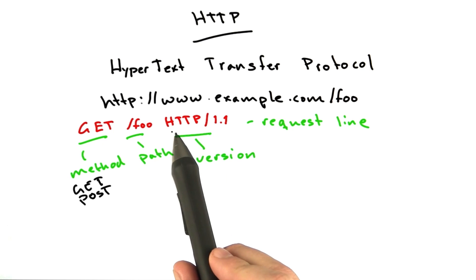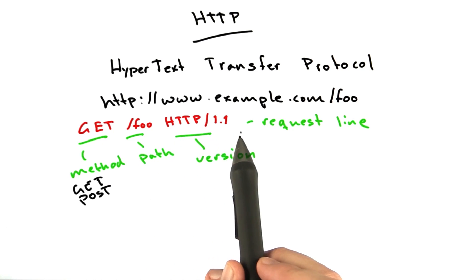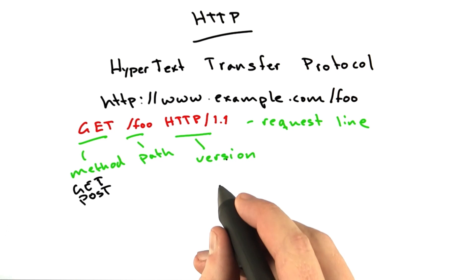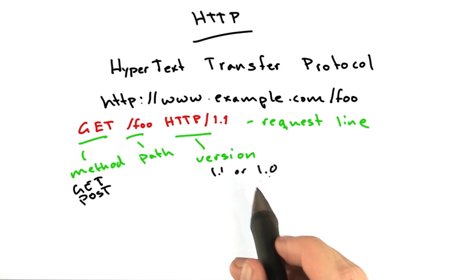And finally is the version. It's always HTTP/ and then a version number. Most browsers and servers these days speak 1.1, but we'll also touch on 1.0 a little bit in this class because 1.0 has a few uses of its own.